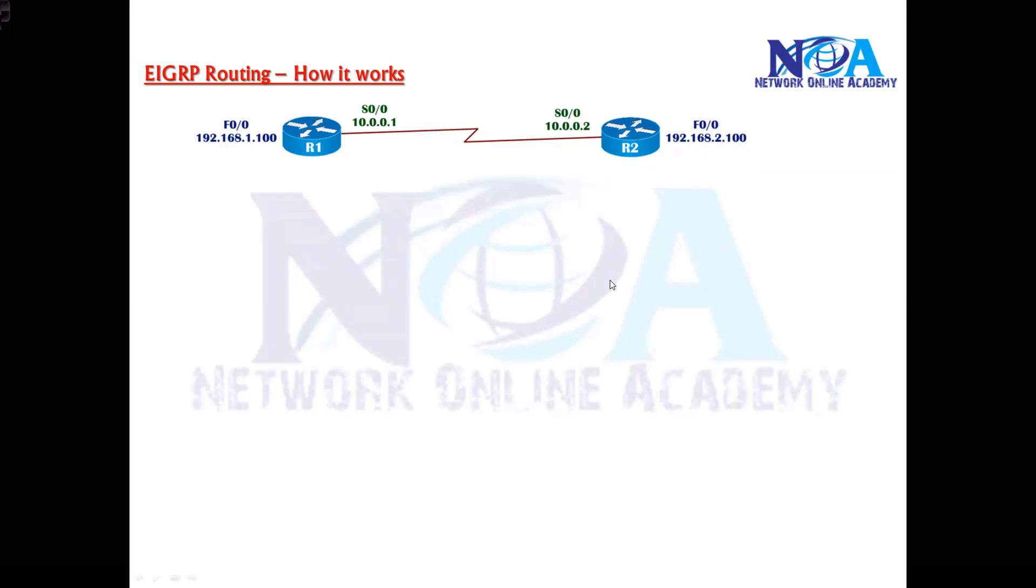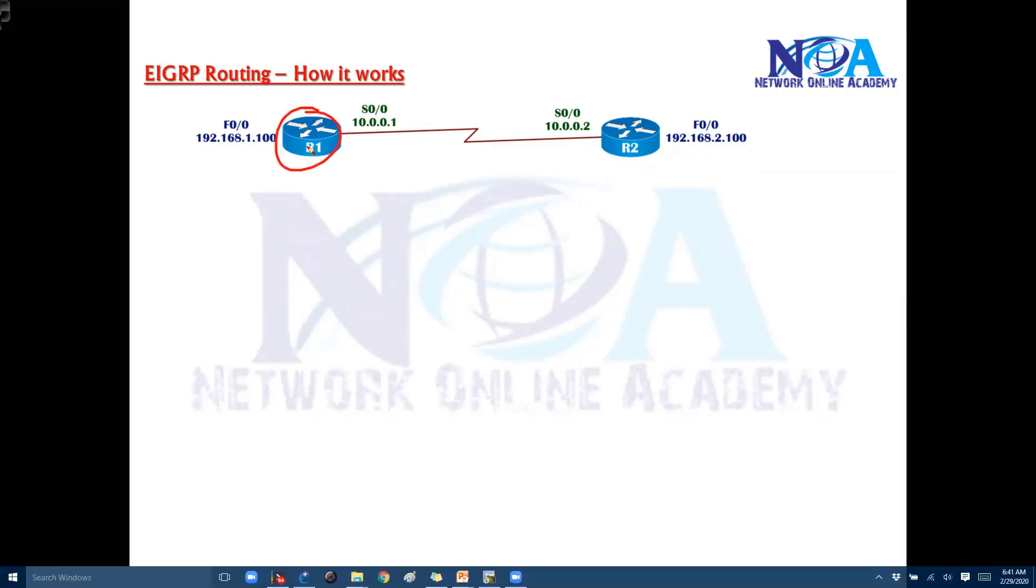So generally let's take an example here. I do have a router 1 and a router 2. Now these two routers are connected to each other via some WAN link and these are my LAN interfaces. So what I want is this LAN to LAN communication to work.